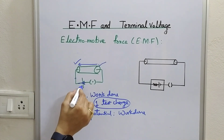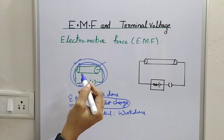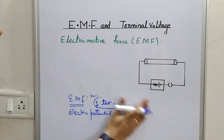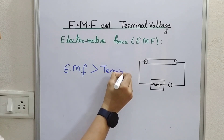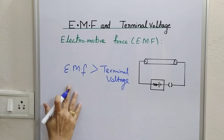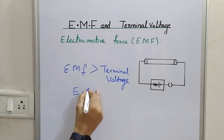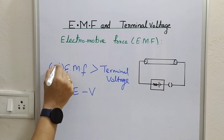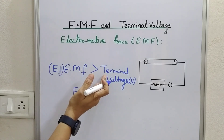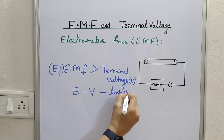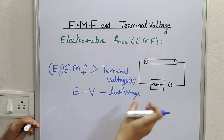EMF is the complete work done, while electric potential is the work done only in the external circuit. Therefore, EMF is always greater than terminal voltage. EMF is denoted by E, terminal voltage by V, and the difference between them is called the lost voltage. The lost voltage is due to the resistance offered by the cell itself.